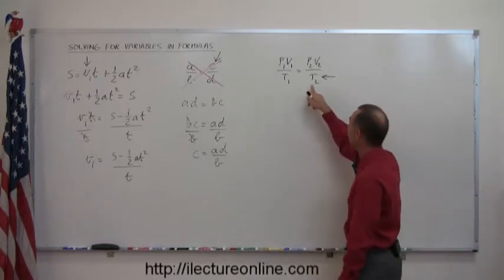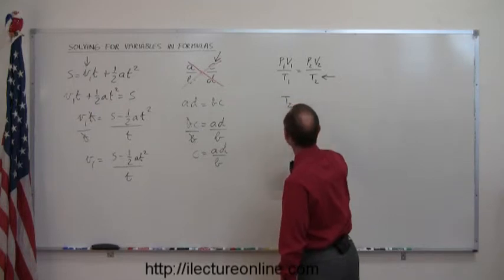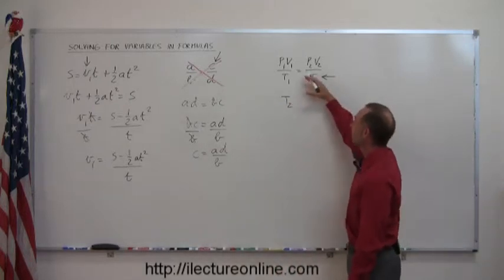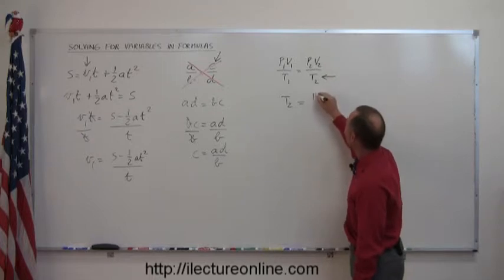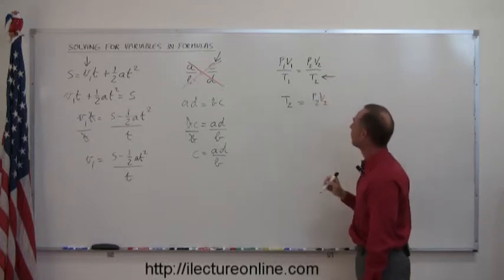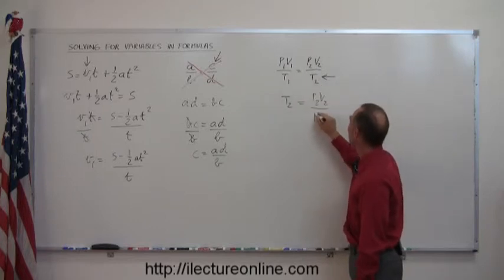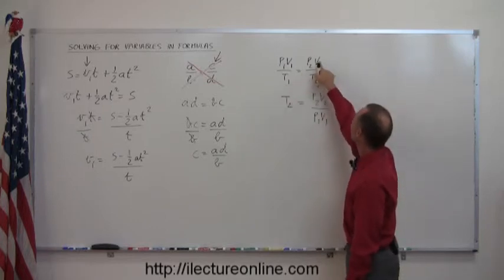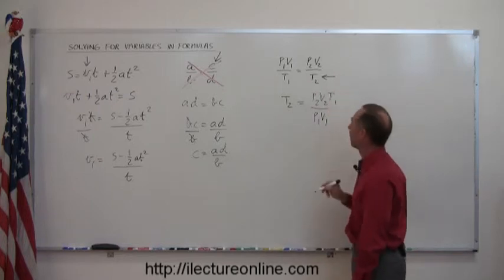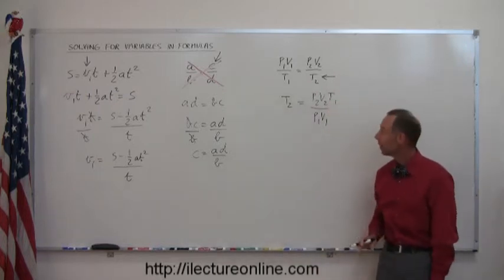So the t2 goes to the upper left corner, that's along the diagonal. The p2 v2 are already here so I'm going to leave those there. The p1 v1 are going to move across diagonal down here and the t1 is going to move across diagonal this way. Problem solved, how about that.